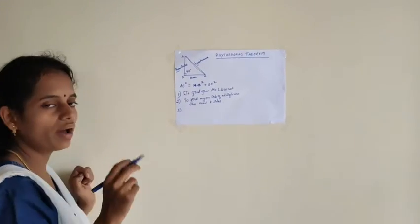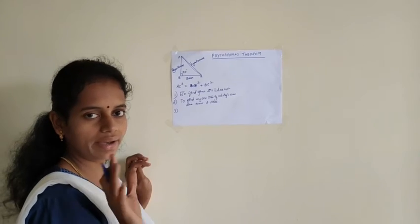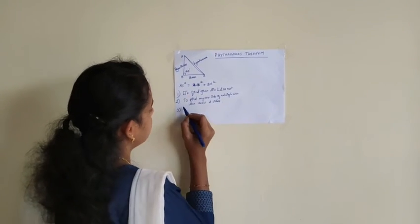And third one is, we don't know the diagonal of a square or rectangle, we will use the Pythagoras theorem.